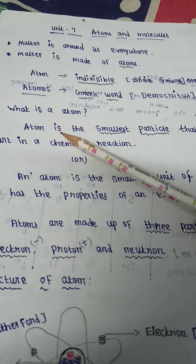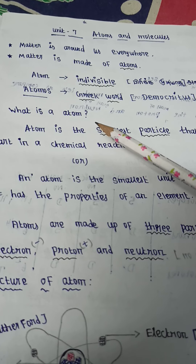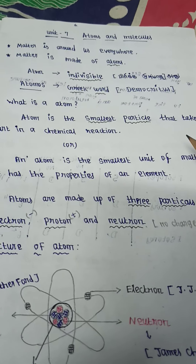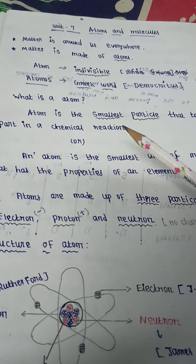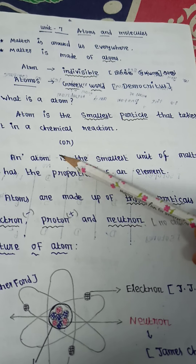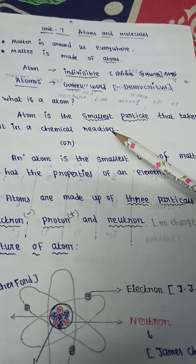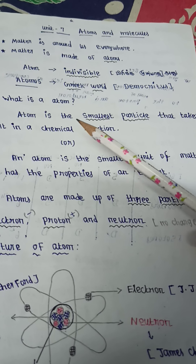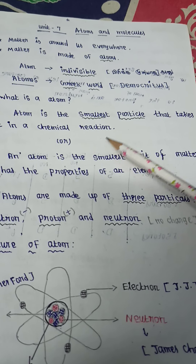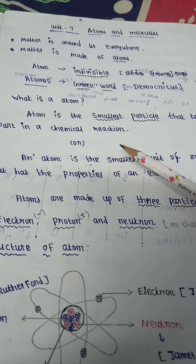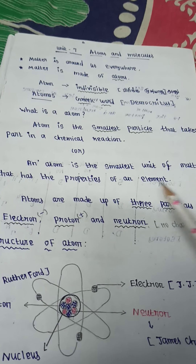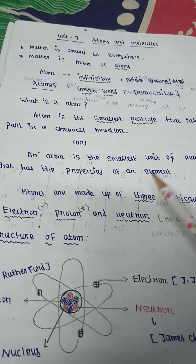Democritus defined what is the atom. Atom is the smallest particle that takes part in a chemical reaction. Atom is the smallest particle that has the properties of an element.